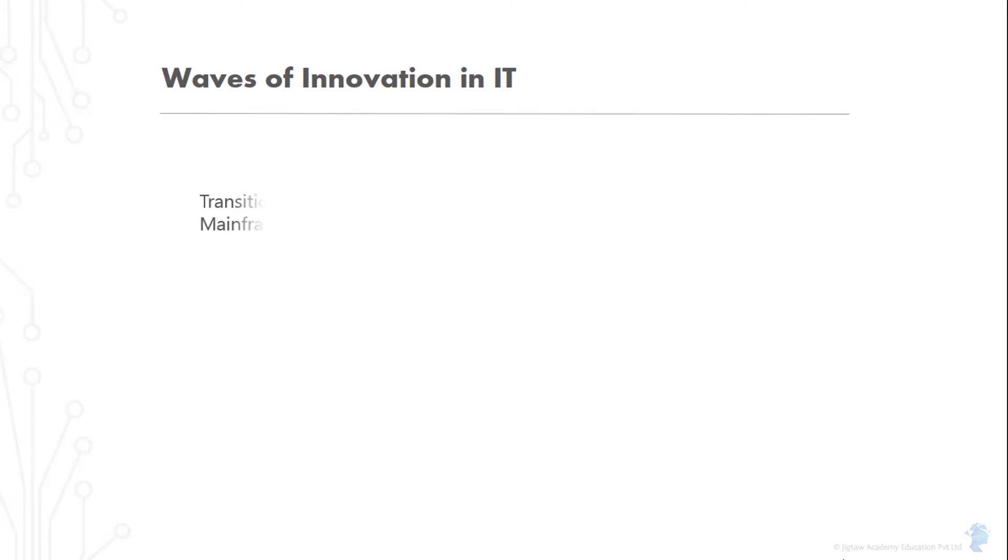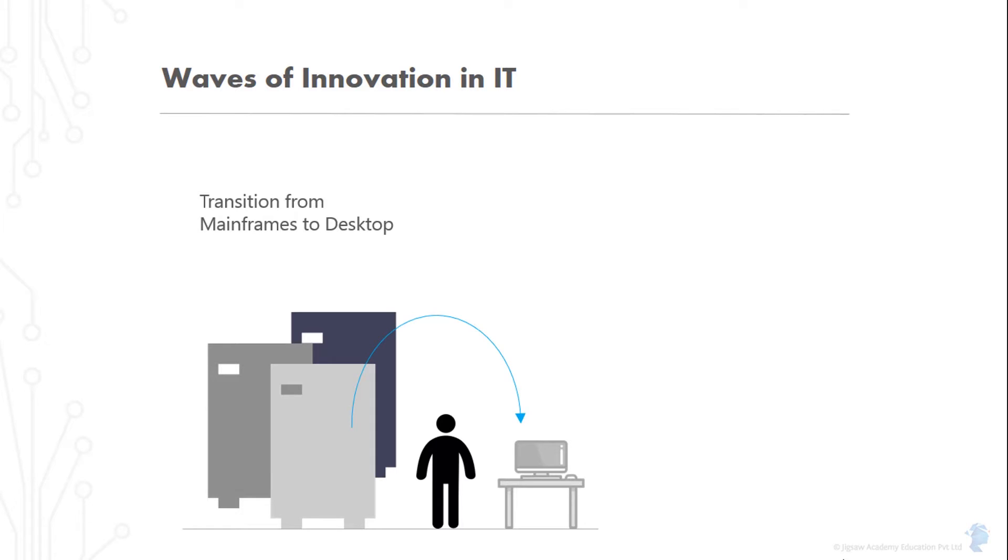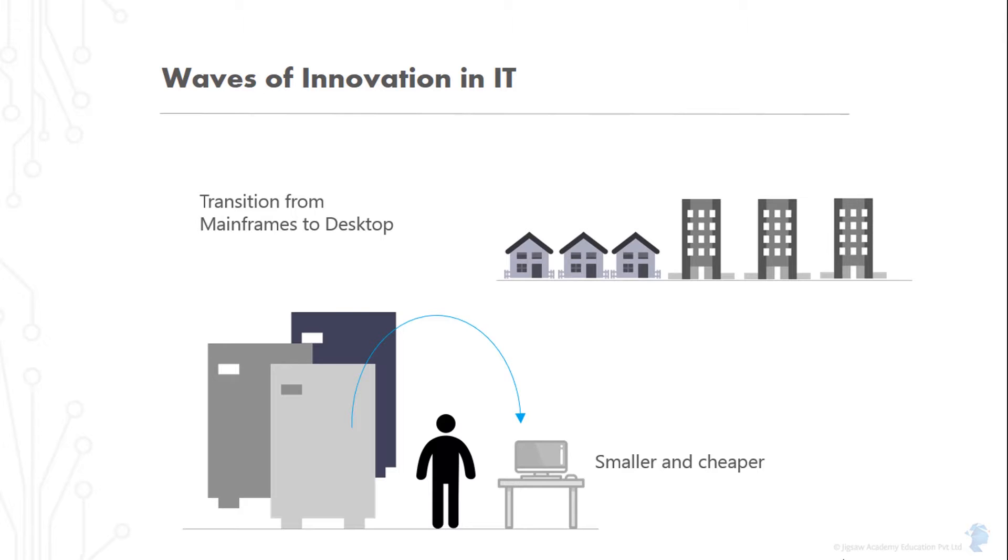Think about the transition from mainframes to desktop machines in the 1980s. That was not just about how much smaller or cheaper a desktop computer was compared to a mainframe. It also meant that every household, every desk at every business would now have a personal computer on it.